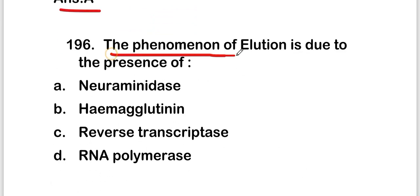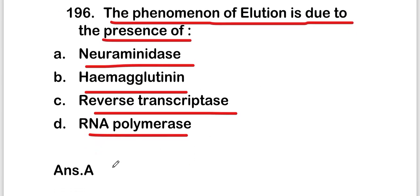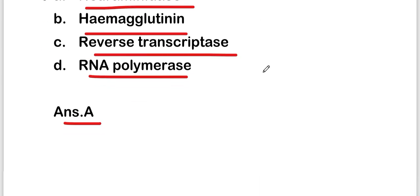The next question: the phenomenon of elution is due to the presence of — neuraminidase, hemagglutinin, reverse transcriptase, or RNA polymerase. The right answer is option A — neuraminidase. The phenomenon of elution is due to the presence of neuraminidase.